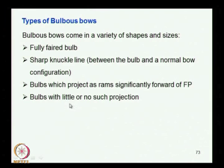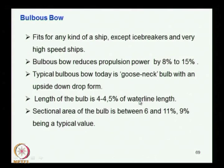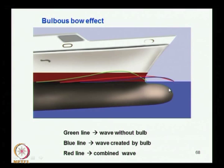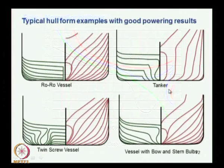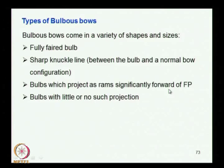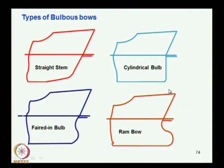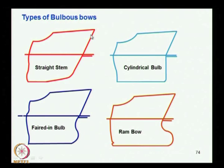Some bulbs project as rams significantly forward — you call them ram bulbs — while others have little or no such projection. There are different categories where the projection may be less or very high. The size and type of bulb, as mentioned before, depends on the vessel's form, fullness (CB value), and the speed of the vessel.